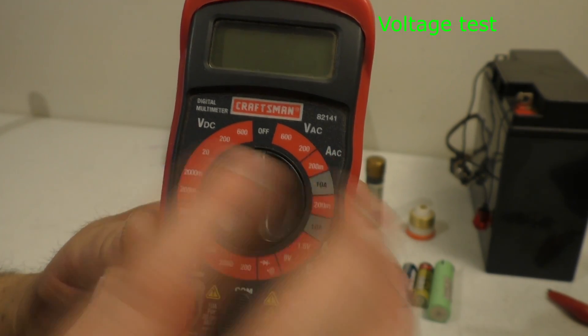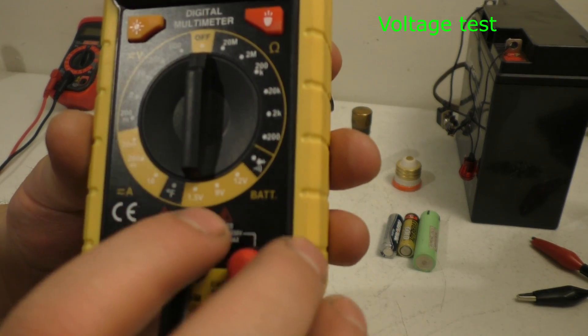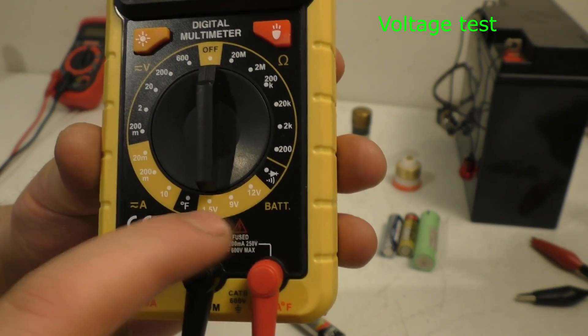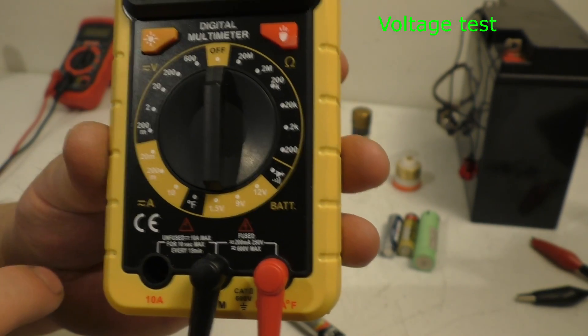And on this one here, you've got VDC, meaning volts DC, VAC. But then some have a selector to where you can literally do your 1.5, 9 volt, and 12 volt. But this does the exact same here.